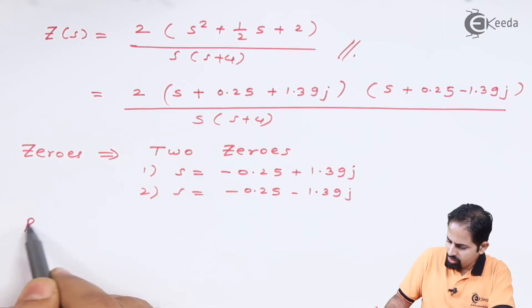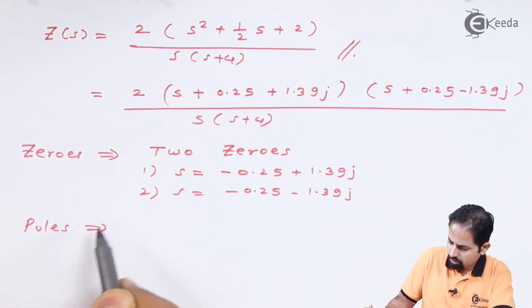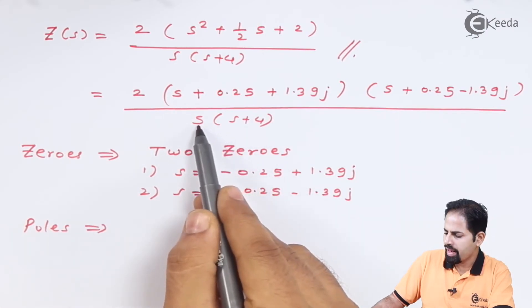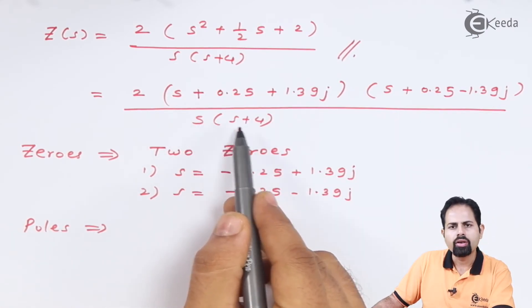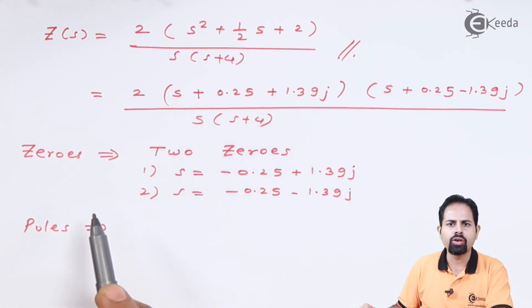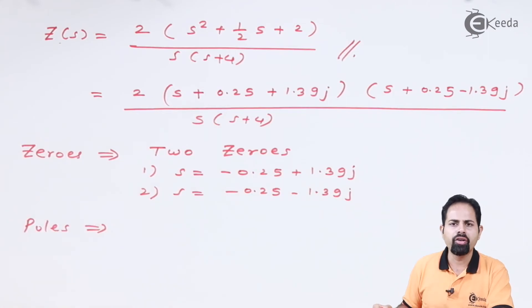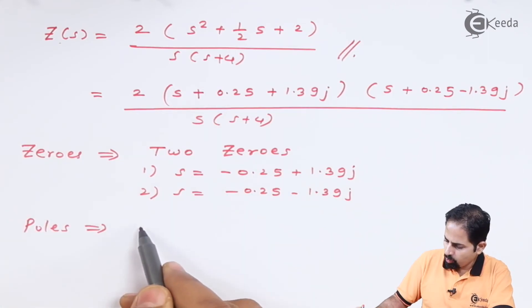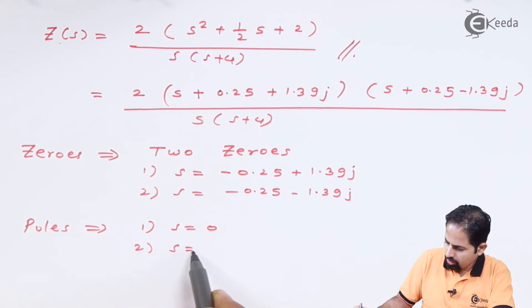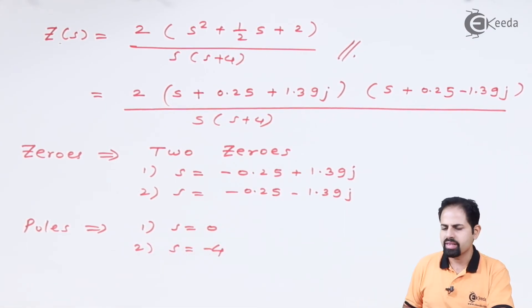Now about poles, here you can see whenever this S is 0 or S is minus 4, your denominator will become 0. And when denominator becomes 0, your function becomes infinity. So there are two poles: first one is S equal to 0, and second one is S equal to minus 4.